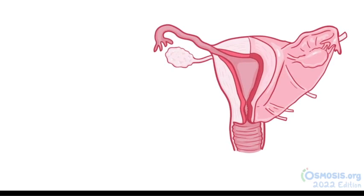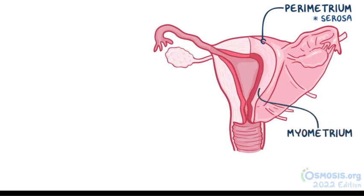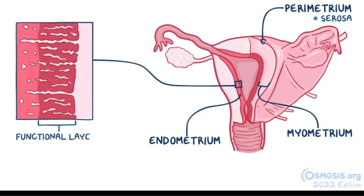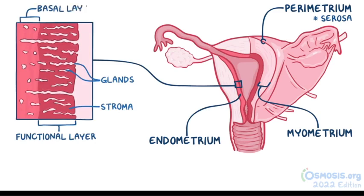An outer thin layer called the parametrium or the serosa, a middle smooth muscle layer called the myometrium, and the innermost layer, the endometrium. The endometrium has two layers: an inner functional layer made up mainly of glands and supporting connective tissue called stroma, and an outer thin basal layer.